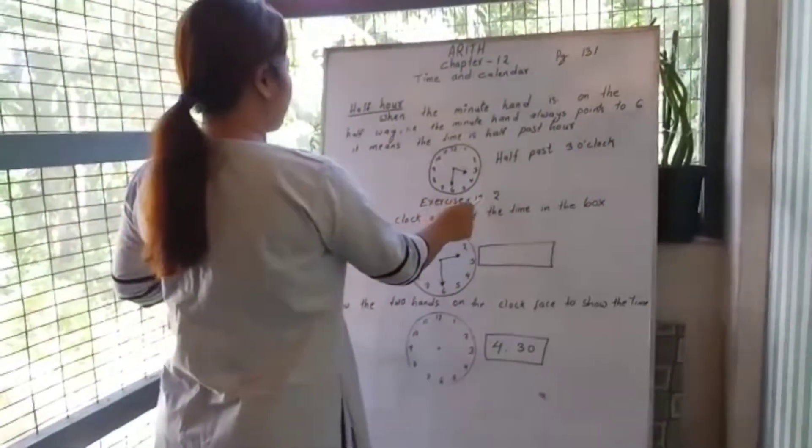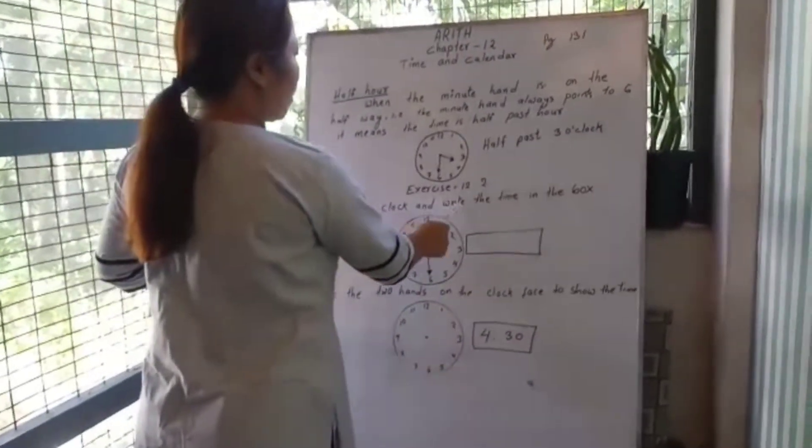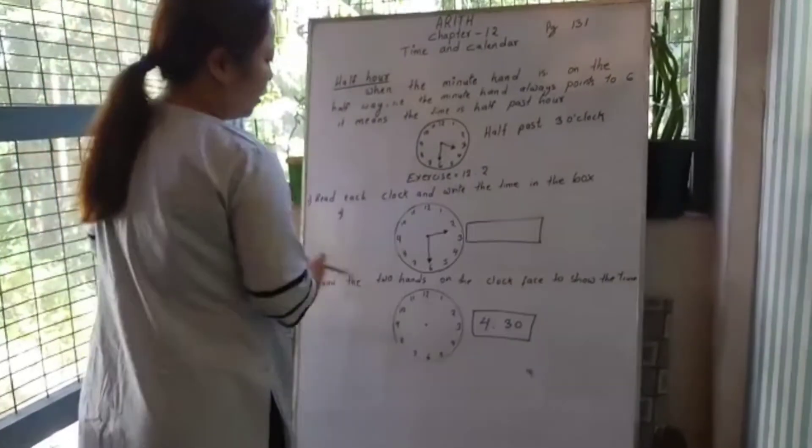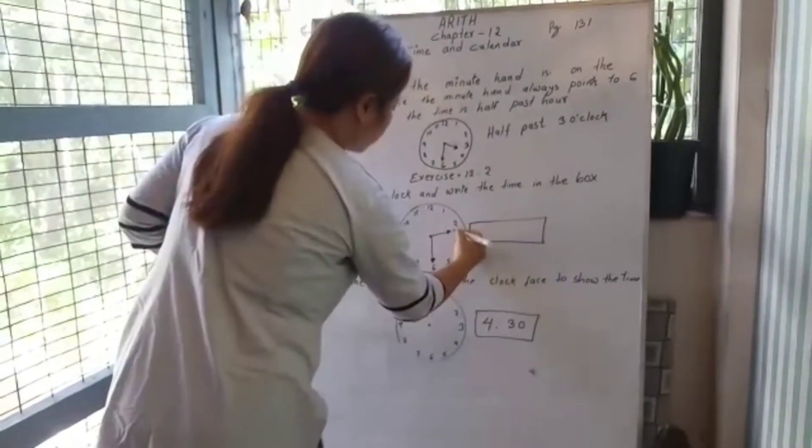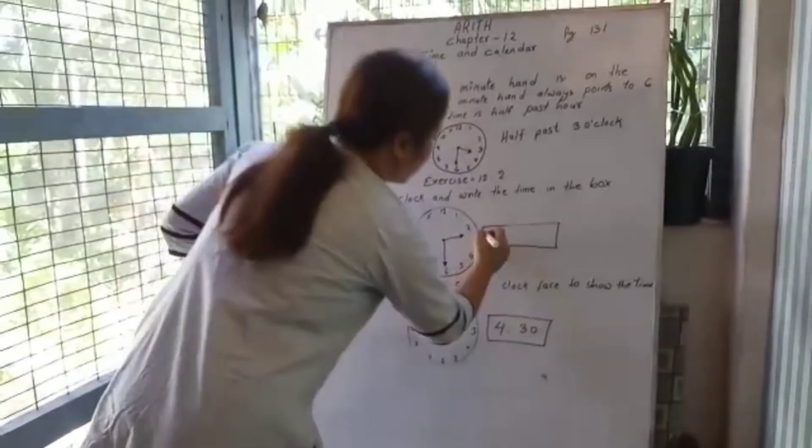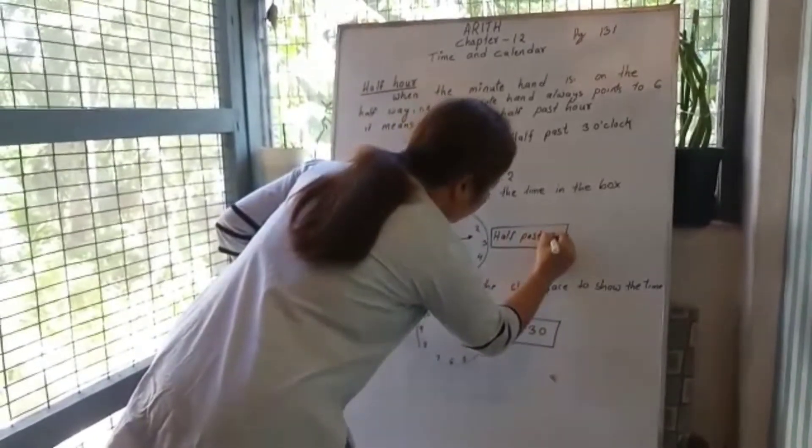Exercise 12.2, number 1: read each clock and write the time in the box. The short hand is at 2 and the long hand is at 6, so the time is half past 2.